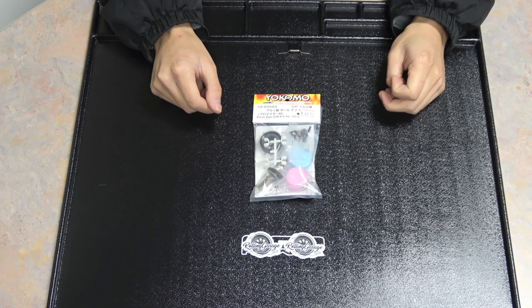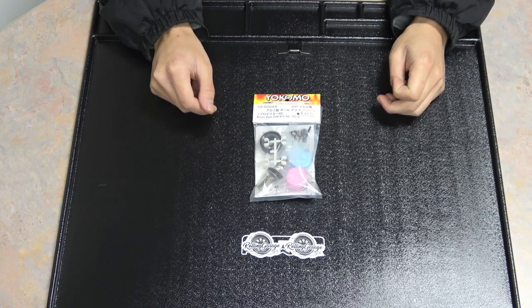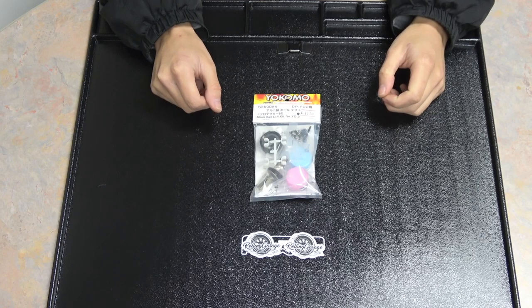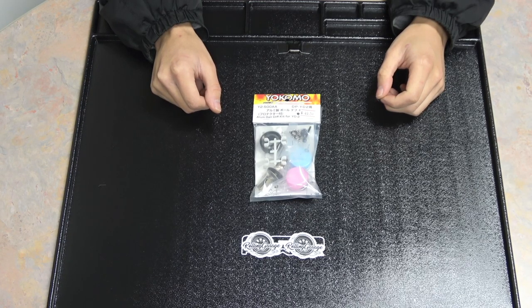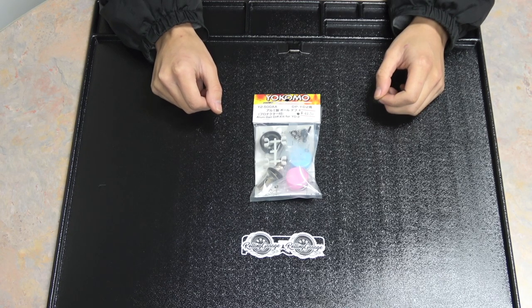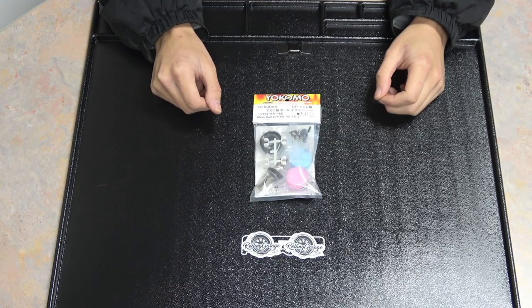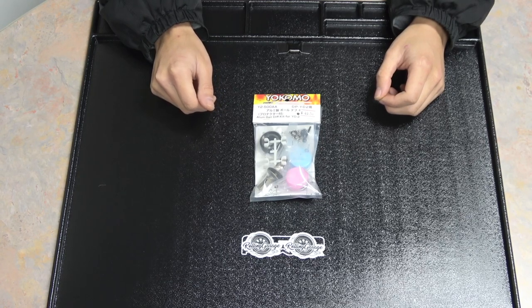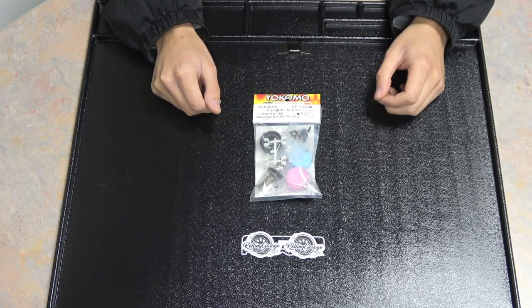This ball diff allows you to freely adjust the amount of locking action your diff has, although that's not to be confused with a Rhino Racing CLSD, which is an active and variable locking diff. A ball diff can be set at one static locking amount, so you can set it as tight as you want, all the way up to basically a fully locked spool, or loosen it up all the way to pretty much an open diff depending on your surface grip and anywhere in between.